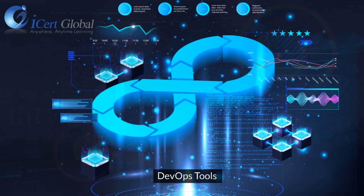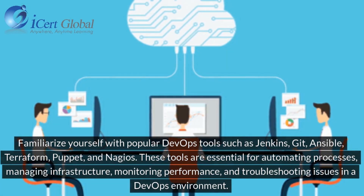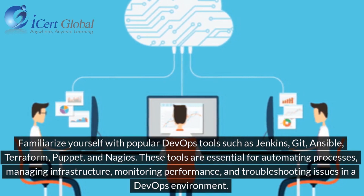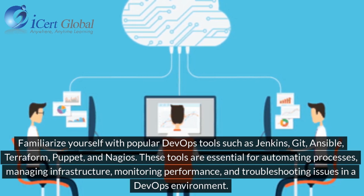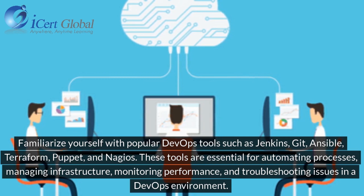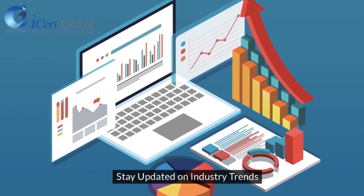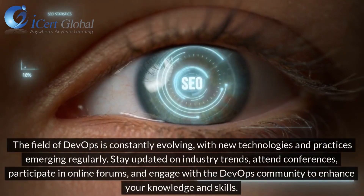Familiarize yourself with popular DevOps tools such as Jenkins, Git, Ansible, Terraform, Puppet, and Nagios. These tools are essential for automating processes, managing infrastructure, monitoring performance, and troubleshooting issues in a DevOps environment.